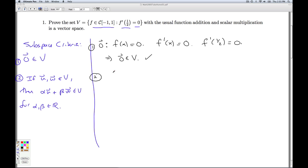Condition 2. Suppose u and w are in V and alpha and beta are real numbers. I have to show that alpha u plus beta w is also in V. What does it mean for u and w to be in V?